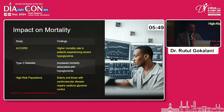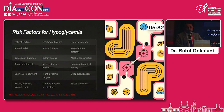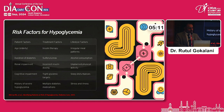Higher mortality is especially common in type 2 diabetes, with even type 1 diabetic patients at risk — though most of our type 1 diabetic patients are in the younger age group. Higher-risk populations including the elderly and those with cardiovascular disease require cautious glycemic control. Risk factors for hypoglycemia include age, insulin therapy, irregular meal patterns, duration of diabetes, sulfonylurea use, alcohol consumption, renal impairment, incorrect insulin dosing, unplanned physical activity, cognitive impairment, history of severe hypoglycemia, tight glycemic targets, multiple diabetes medications, sleep disturbance, stress, and illness.